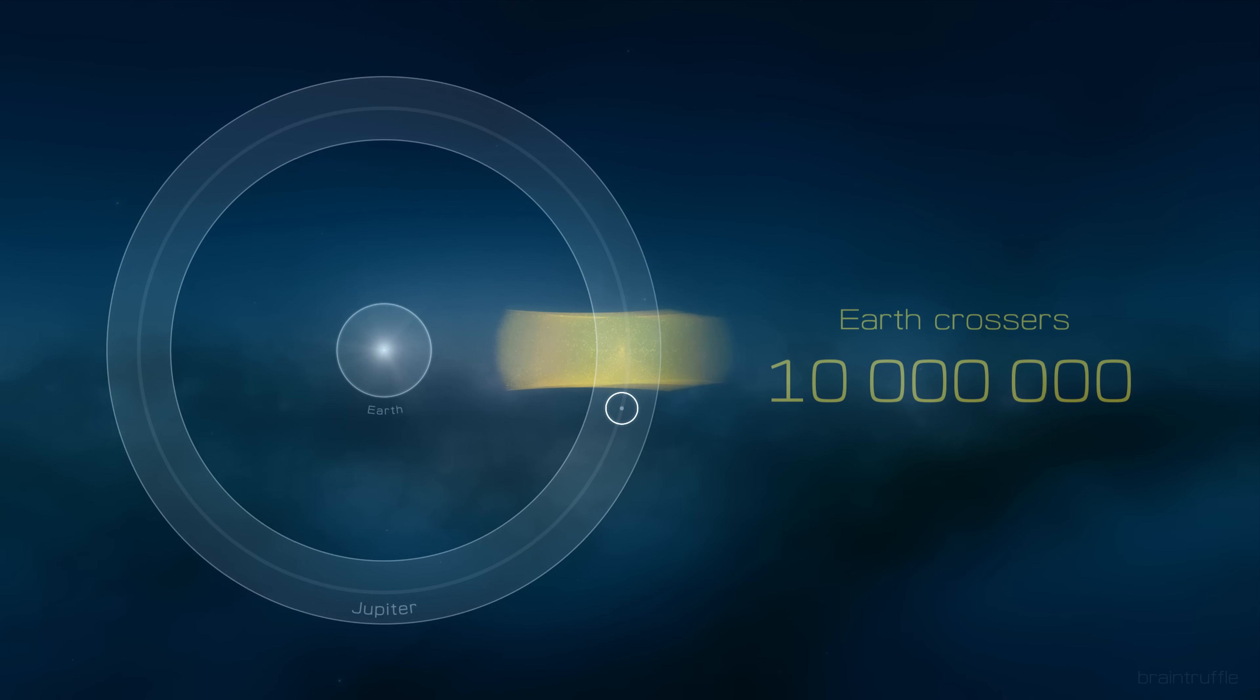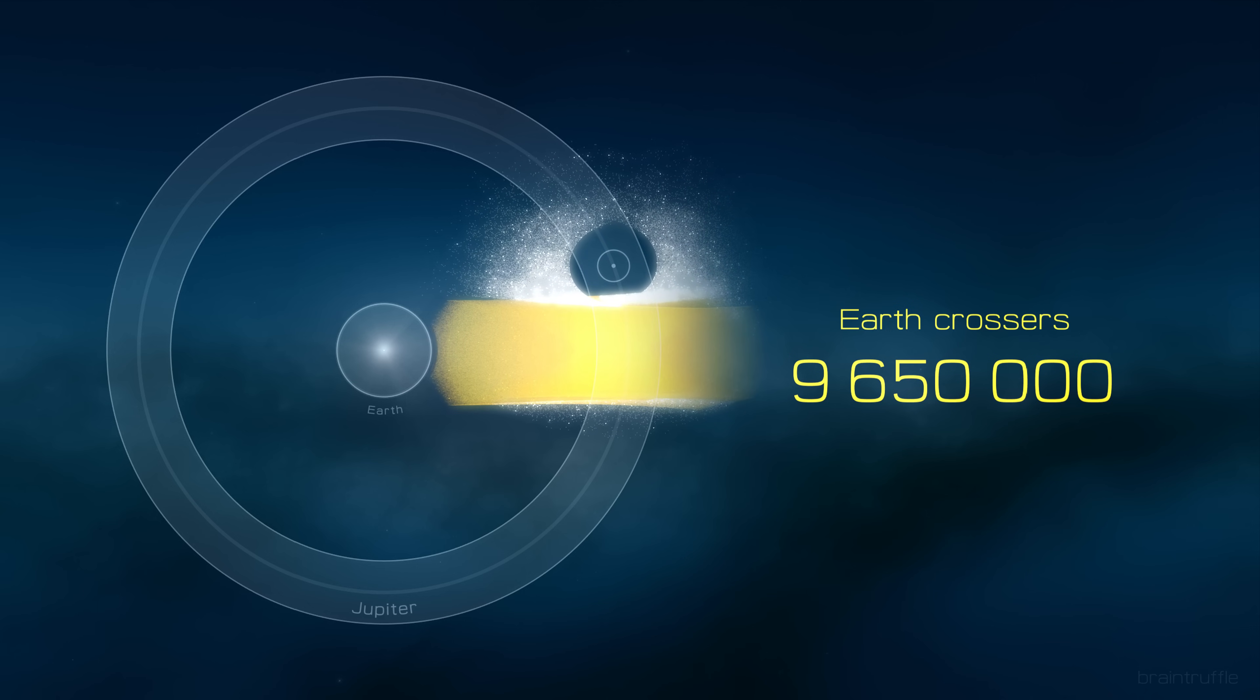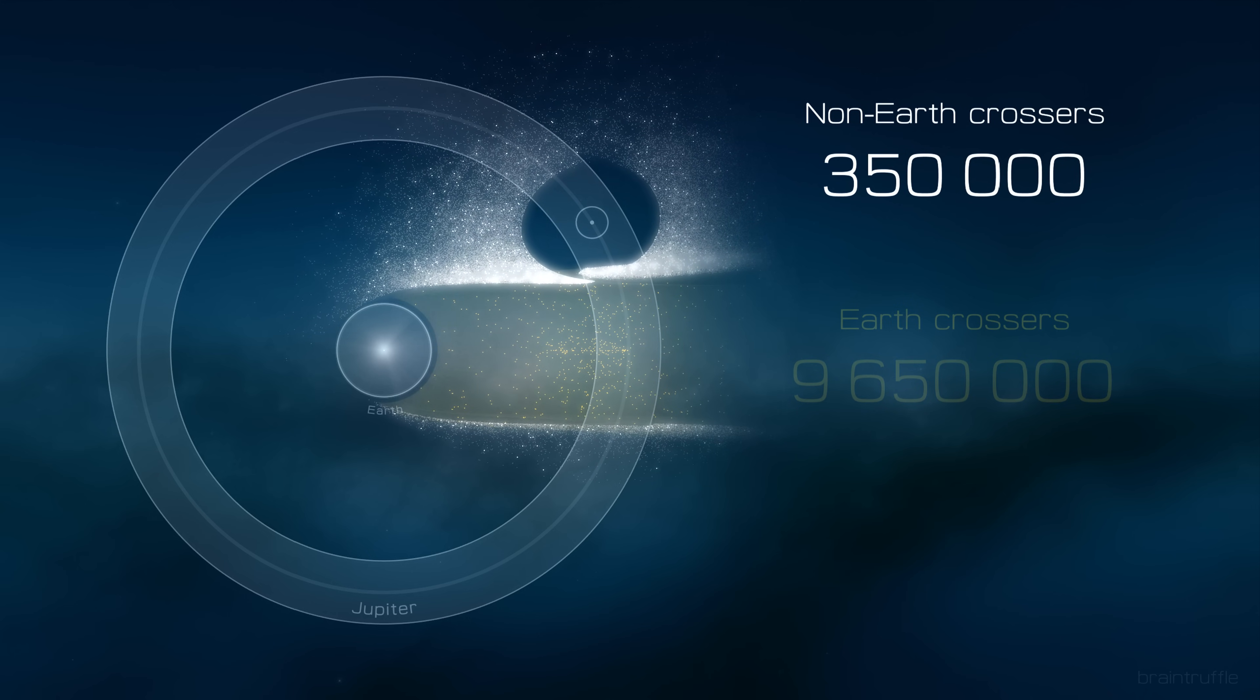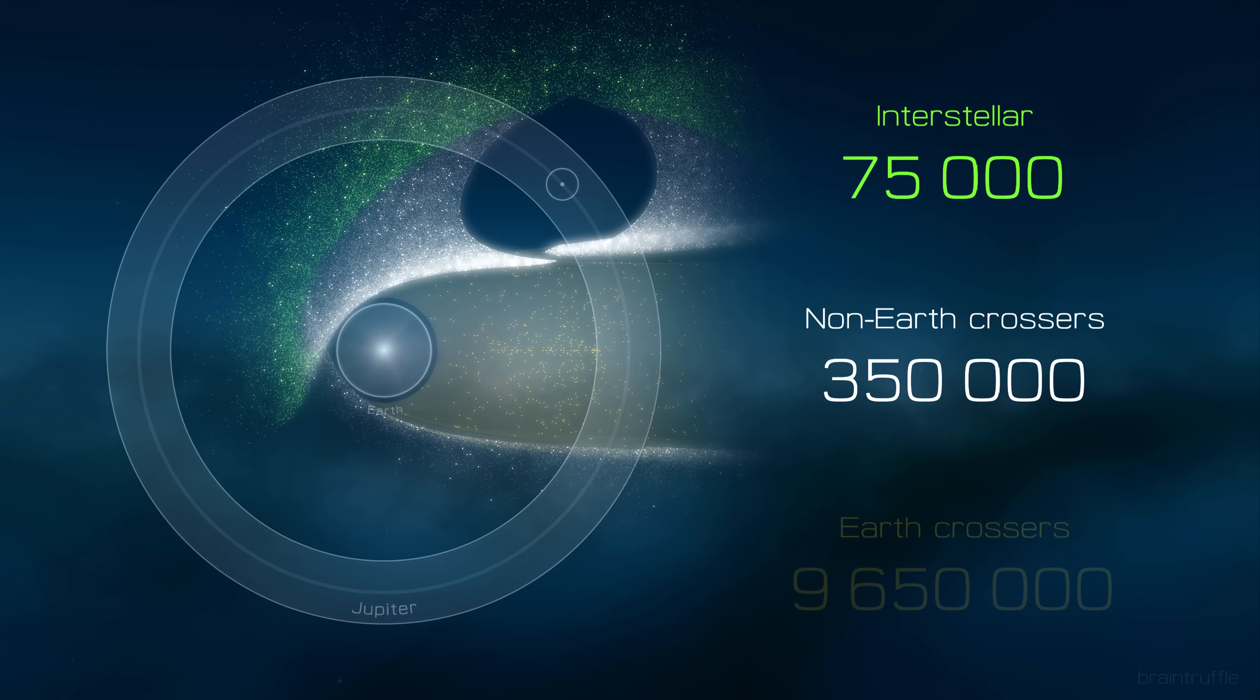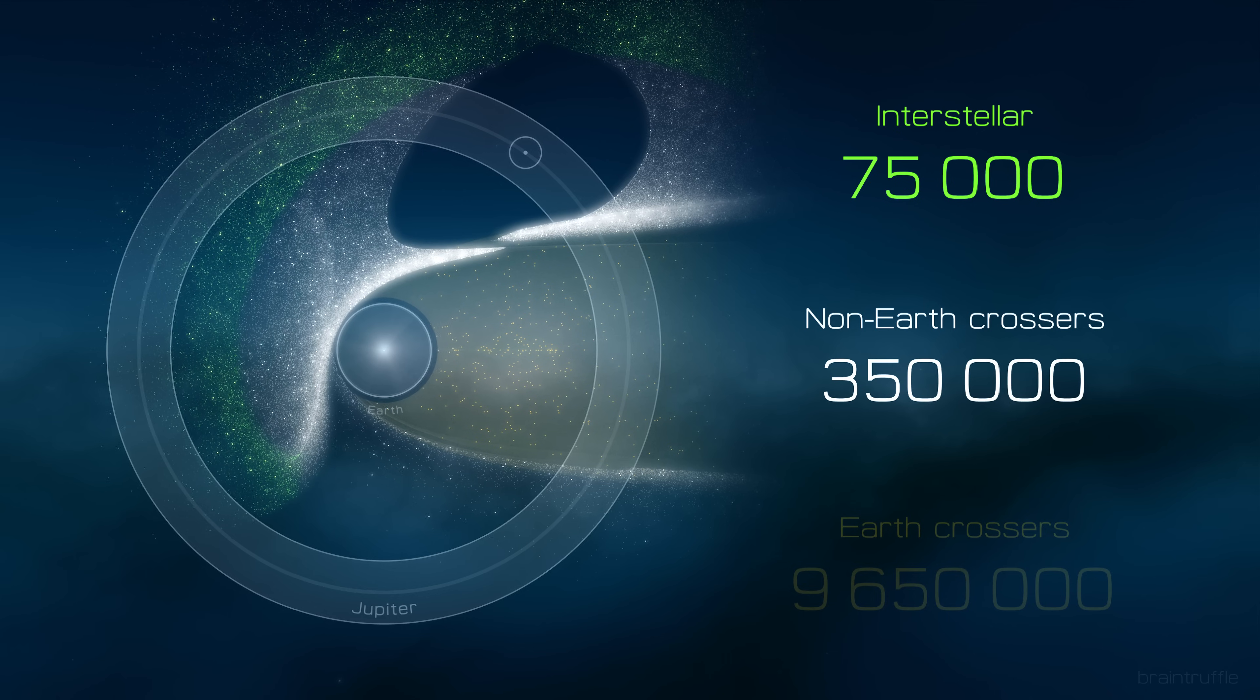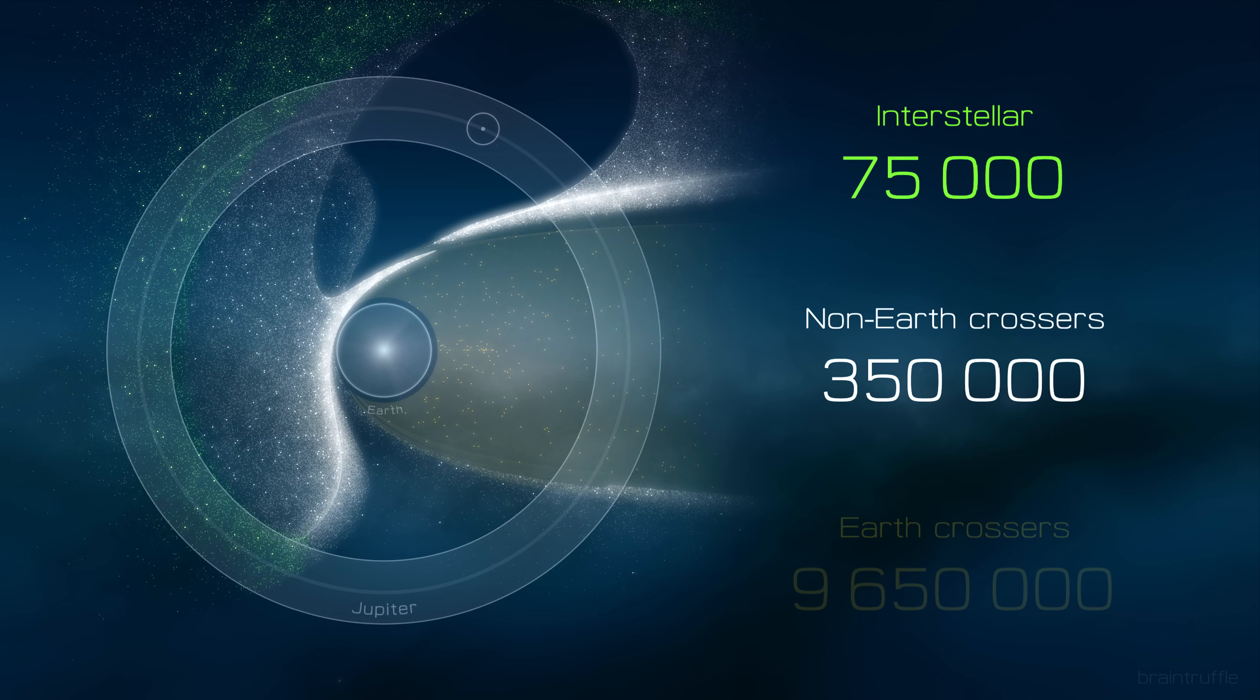So shooting 10 million Earth crossers like this, makes them form a line that Jupiter punches right through. Most objects remain Earth crossers, which again reflects Jupiter's limited reach. 350,000 objects aren't Earth crossers anymore. And among these, 75,000 are ejected from the solar system entirely. That's when after the swing by, they have a positive specific orbital energy. They escape the system on hyperbolic orbits. This is how Jupiter pulls on objects that are Earth crossers already.